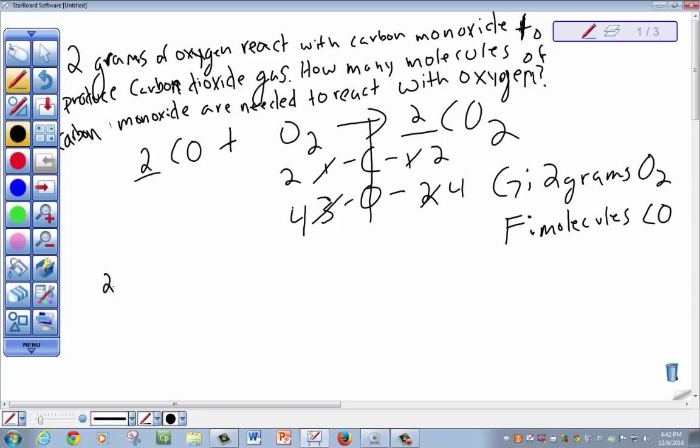So we start with our given. I use the form of dimensional analysis, the square-in-box method. We have 2 grams of oxygen. So to cancel this out, we need to convert this grams of oxygen into moles of oxygen.